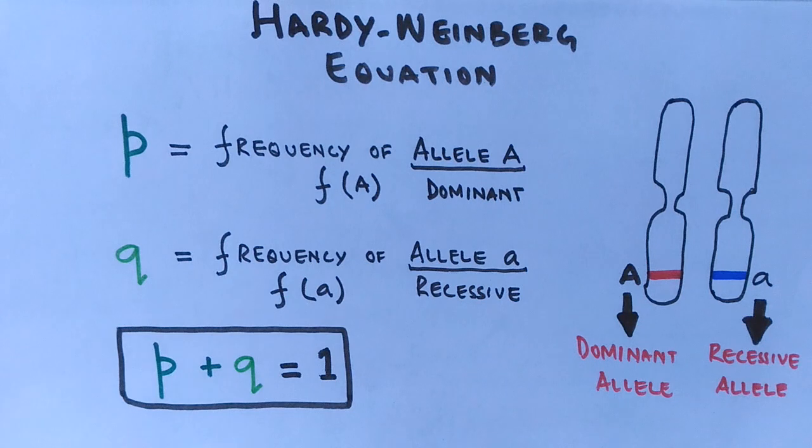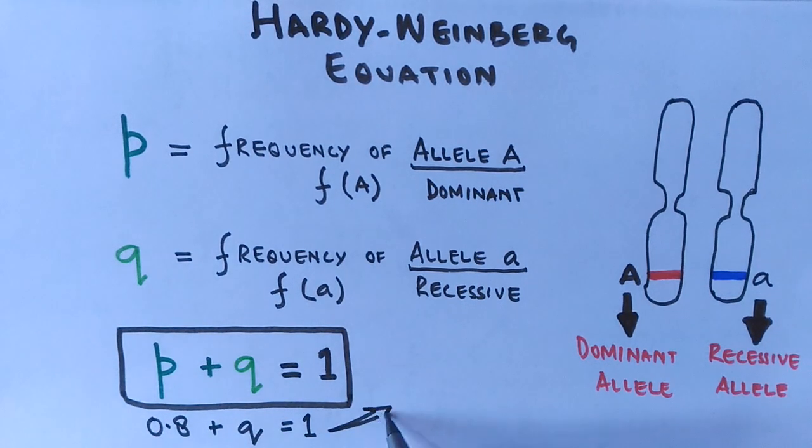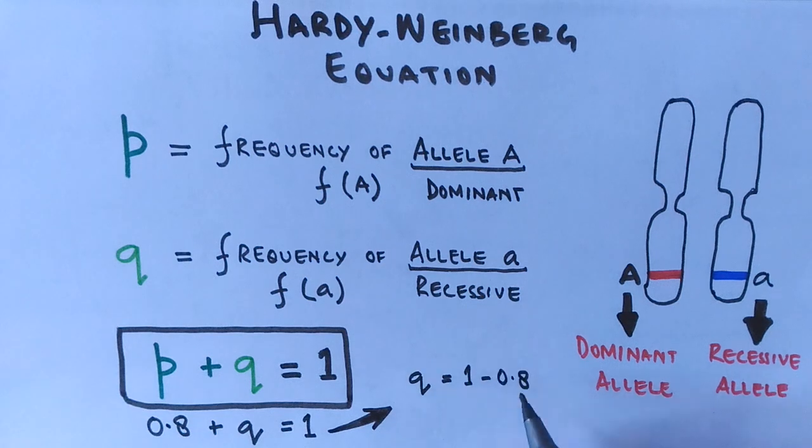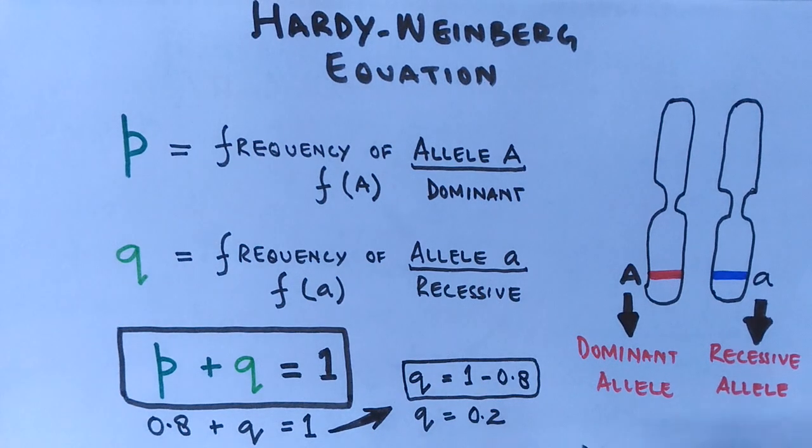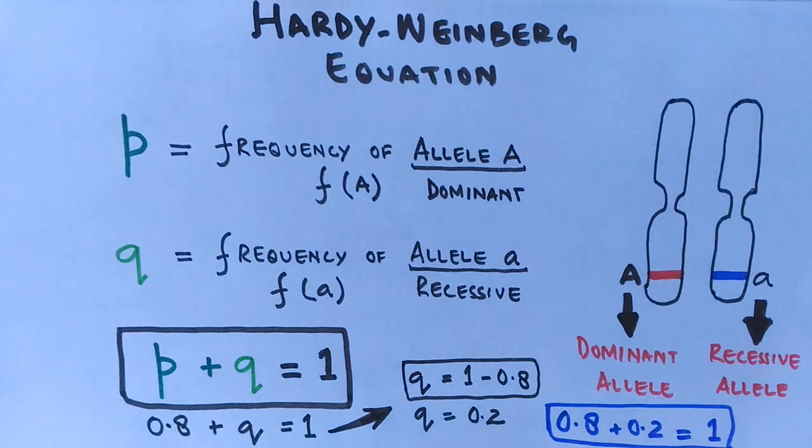Suppose the frequency of dominant allele is 0.8, then we can calculate the rest. Q comes to be 0.2, meaning the total will be one or 100 percent, because evolutionary influences are absent and the population is at equilibrium, which validates Hardy-Weinberg equilibrium.